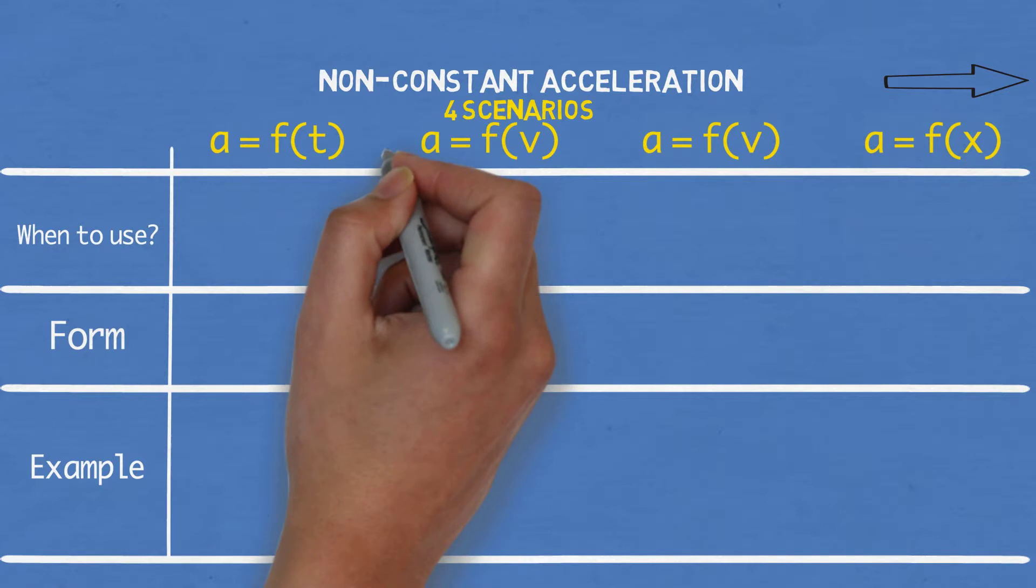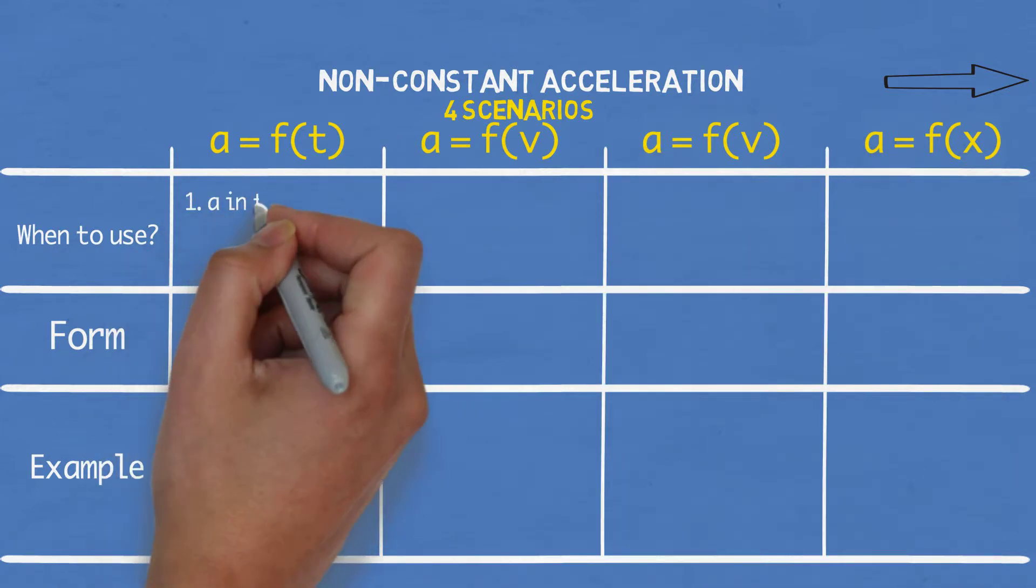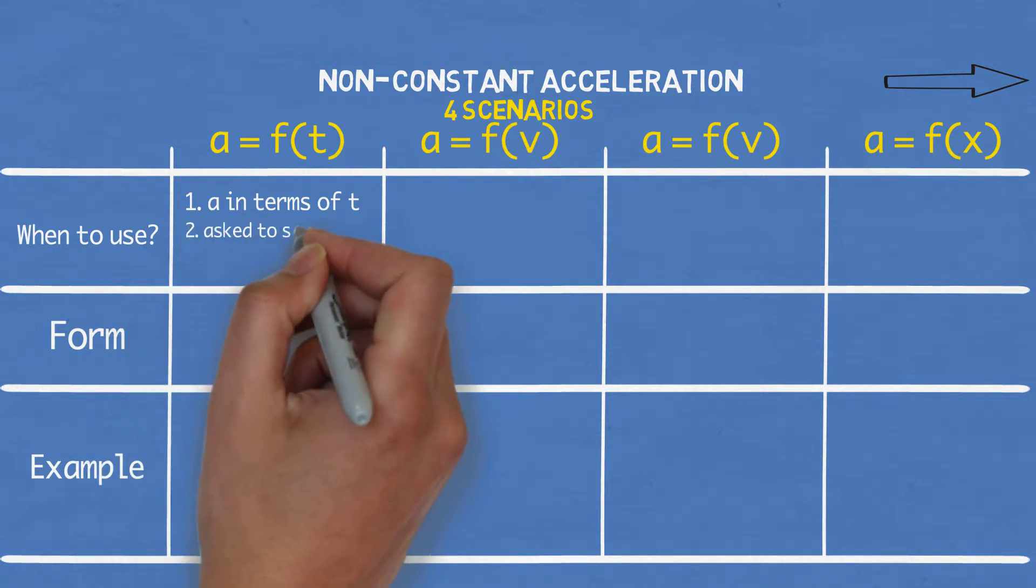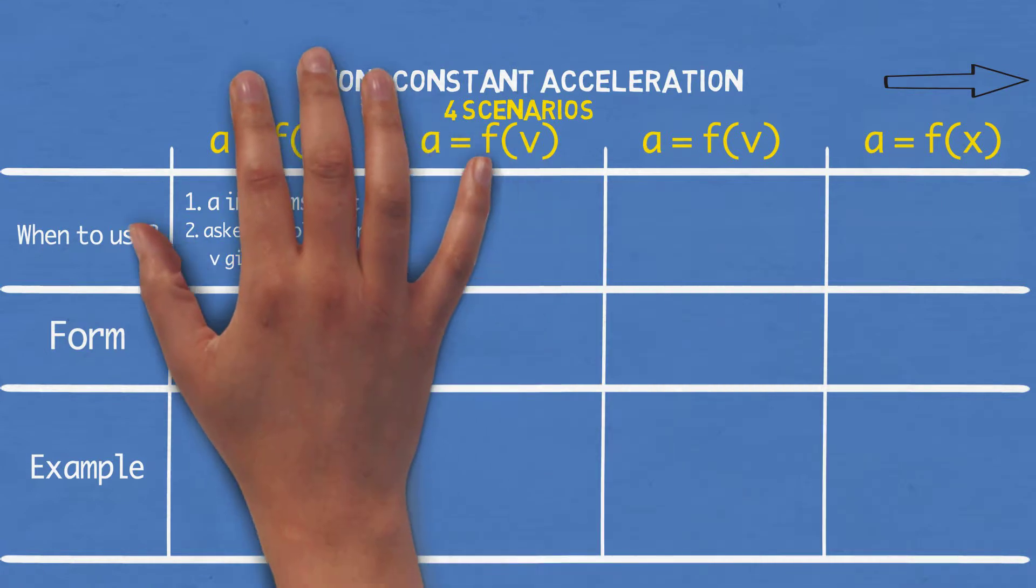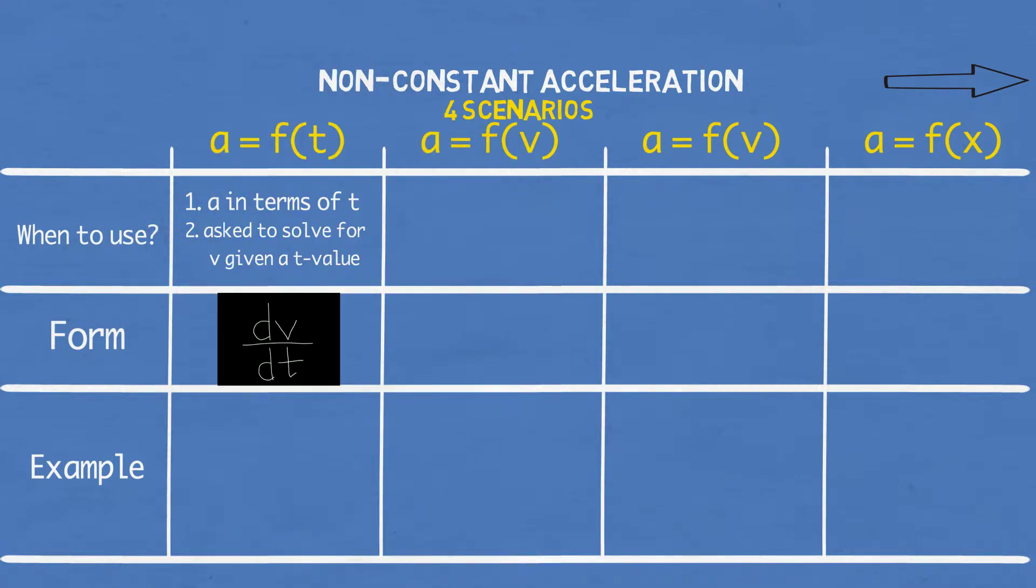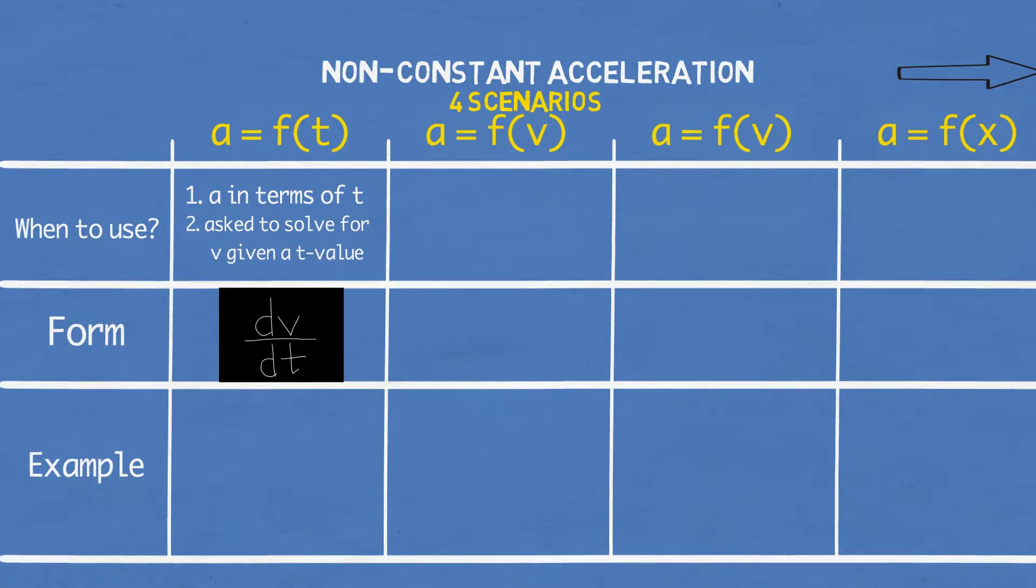Alright, on to the first case. You can use this when you're given acceleration in terms of time and you are asked to solve for velocity for a given time value. The formula takes advantage of the fact that the diff of velocity in terms of time gives us acceleration, and that's what we got, dv dt.